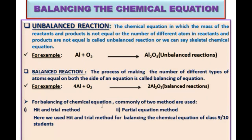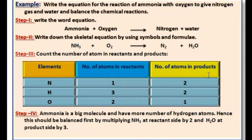For balancing chemical equations, two methods are commonly used: the hit and trial method, which we will practice next time, and the partial equation method. The partial equation method is not for class 9 and 10 students — you will learn it in classes 11 and 12.